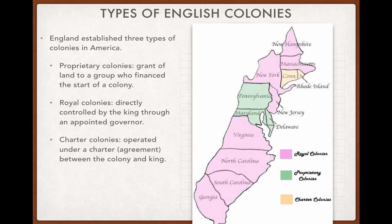Some proprietary colonies were founded as religious refuges. The colony of Maryland was formed as a refuge for Catholics to escape England, named after Queen Mary. Pennsylvania was formed as a refuge for Quakers, who were outcasts in England. Delaware was started to make money. The next type of colony was a royal colony — directly founded by England to expand English power and wealth, not started by someone trying to start a business, but by England itself.